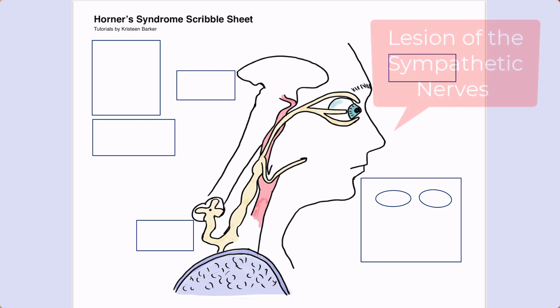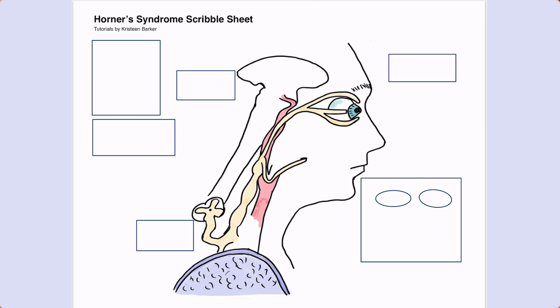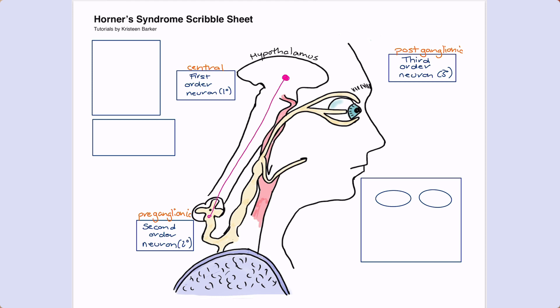By the end of this you should have an awesome one-page summary for the revision win. Horner's syndrome happens due to a lesion of the sympathetic nervous system affecting the eye and the face. In the sympathetic pathway there are three neurons of interest: first order neurons or central neurons, the second order or preganglionic neuron, and the third order or postganglionic neuron. Depending on which neuron is affected, there may be other clinical signs. The first order neuron starts in the hypothalamus, descends through the brainstem, and synapses in the spinal cord at the level of C8 to T2.